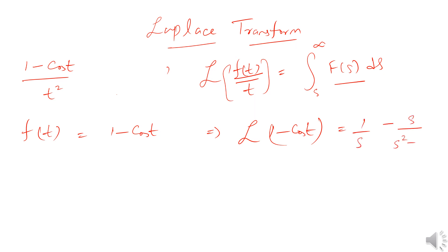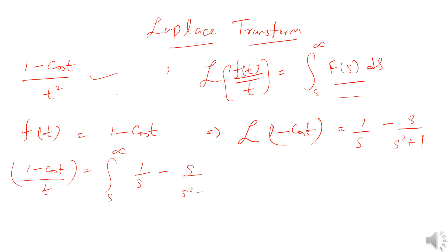In this question we can see that the denominator is t squared, so we have to apply this rule two times. First we will find the Laplace transform of (1 - cos t)/t, so its transform will be the integral from s to infinity of [1/s - s/(s² + 1)] ds. The integral of this function will be ln(s) minus (1/2) ln(s² + 1).